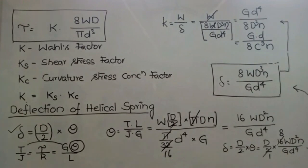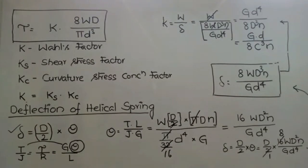So to summarize, we have covered the deflection produced in the helical spring of circular cross-section and the spring constant k = W/delta, which equals Gd/8c³. This lecture covered shear stress produced in the helical spring, deflection produced in the helical spring, and the spring constant or spring stiffness or spring rate of the helical spring under a given load.